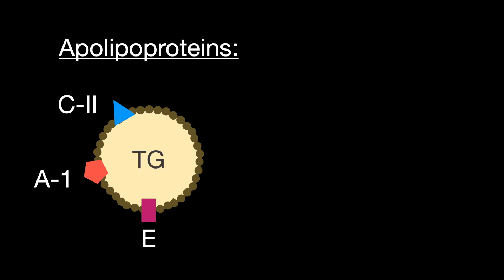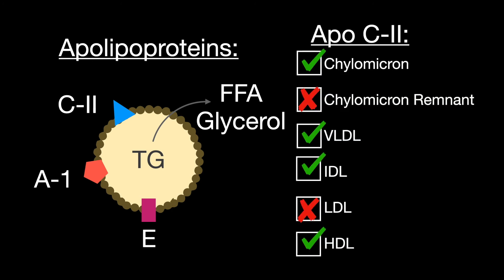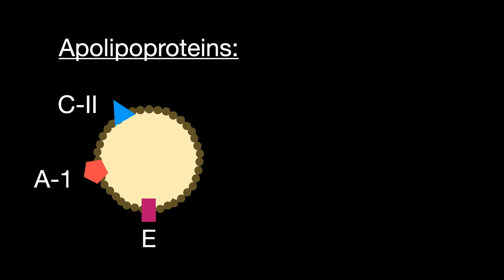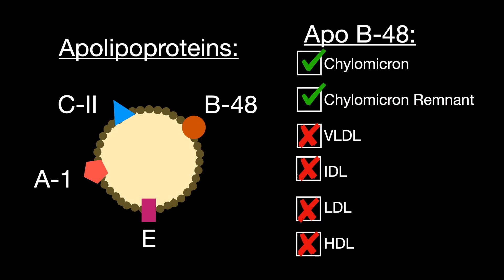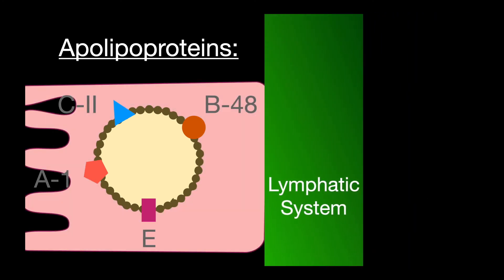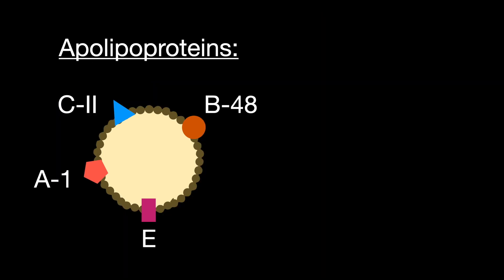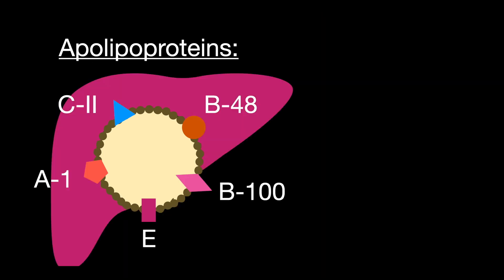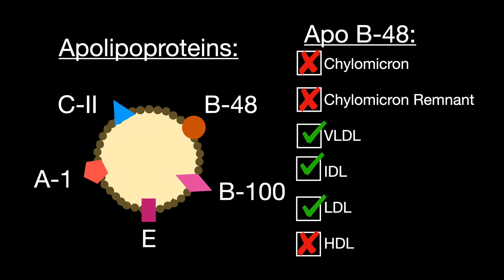Apolipoprotein C2 is a lipoprotein lipase cofactor that cleaves triglycerides for uptake into adipocytes. It is found on all lipoproteins except chylomicron remnants and LDL. Apolipoprotein B48 is the apolipoprotein of chylomicrons and is found on chylomicrons and chylomicron remnants. It controls the secretion of chylomicrons from intestinal cells to the lymphatic system. Apolipoprotein B100 is found on liver-derived transporters: VLDLs, IDLs, and LDLs.